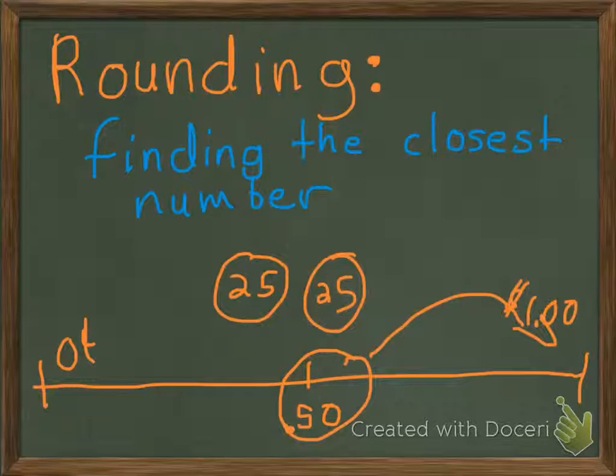Remember, when it's halfway or greater, we round up. When it's less than halfway, the number usually stays the same.